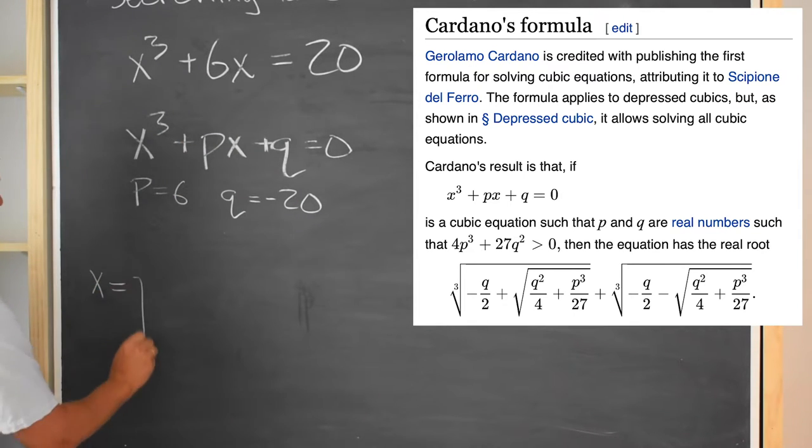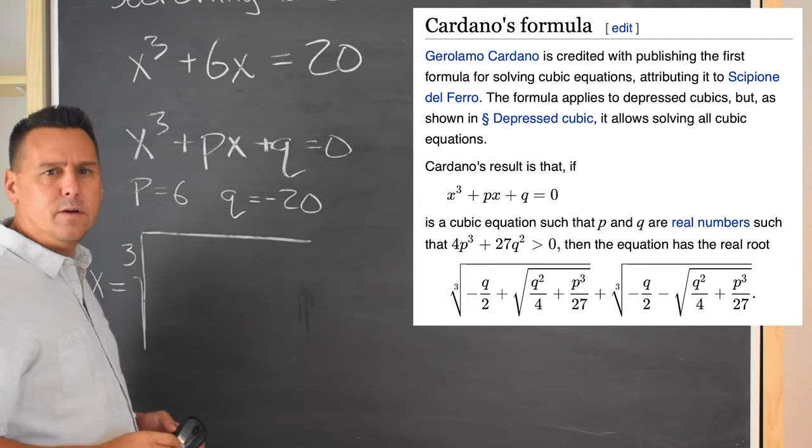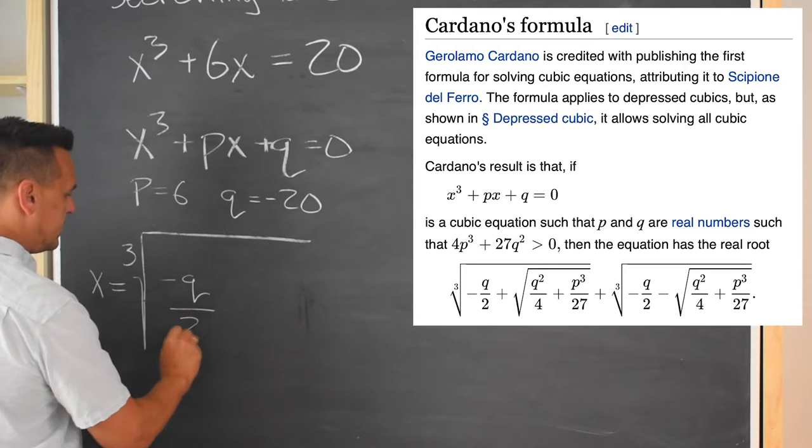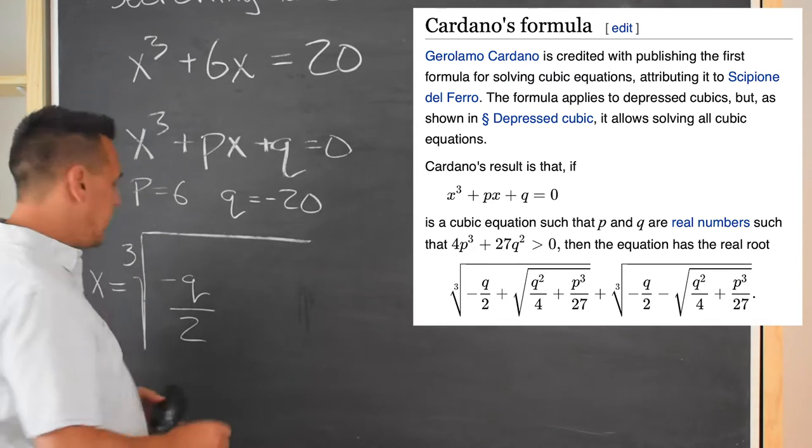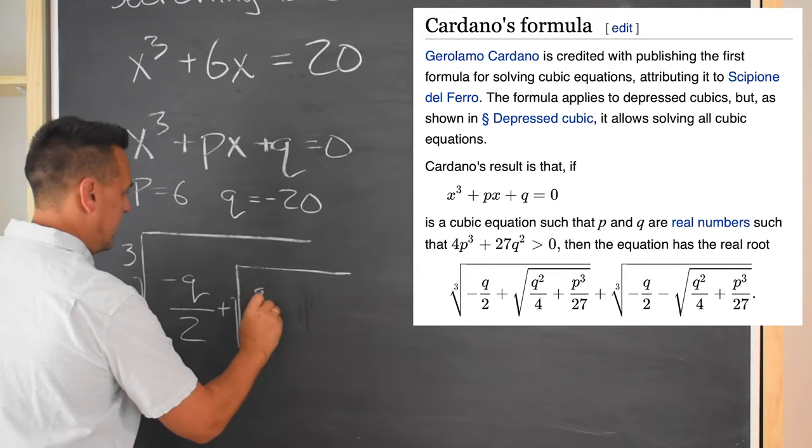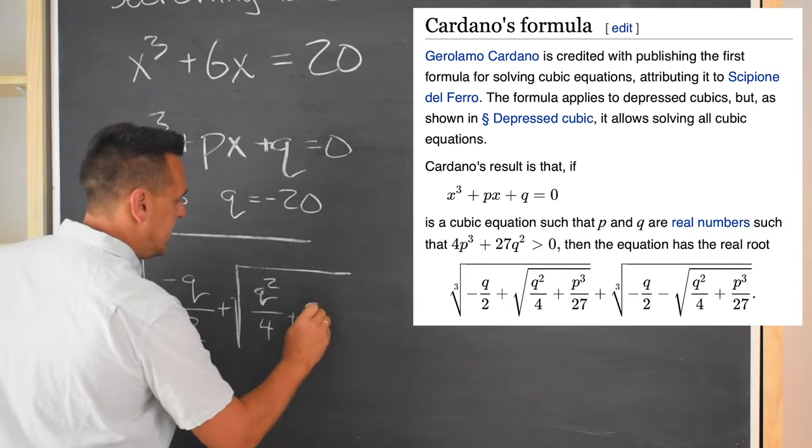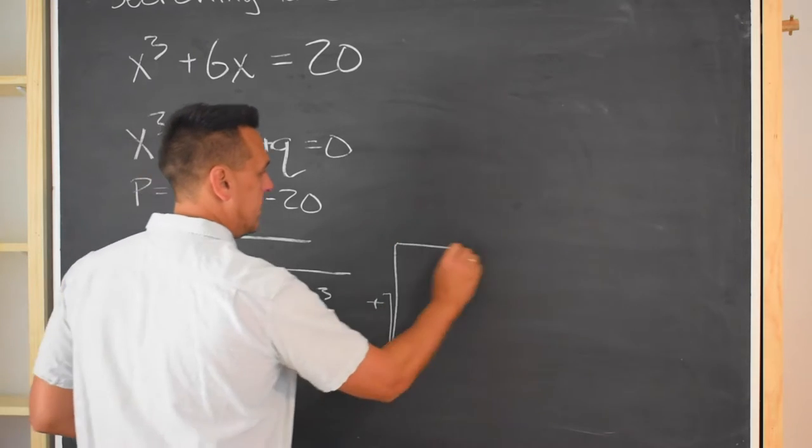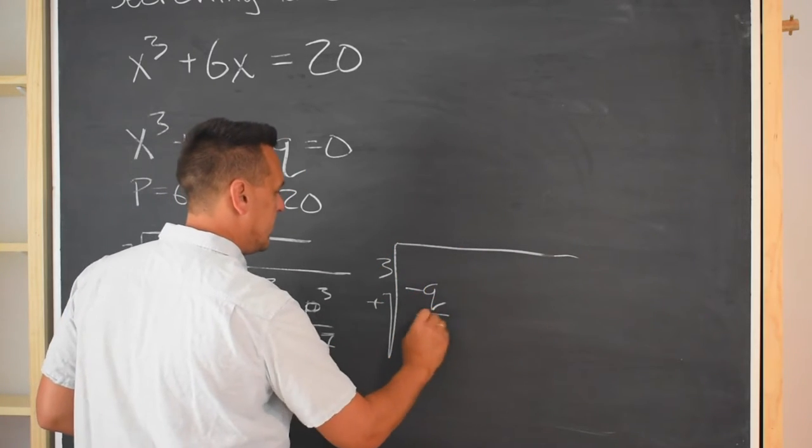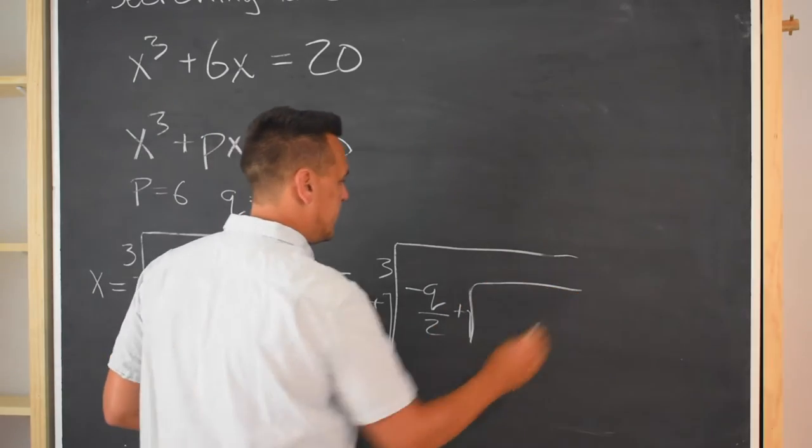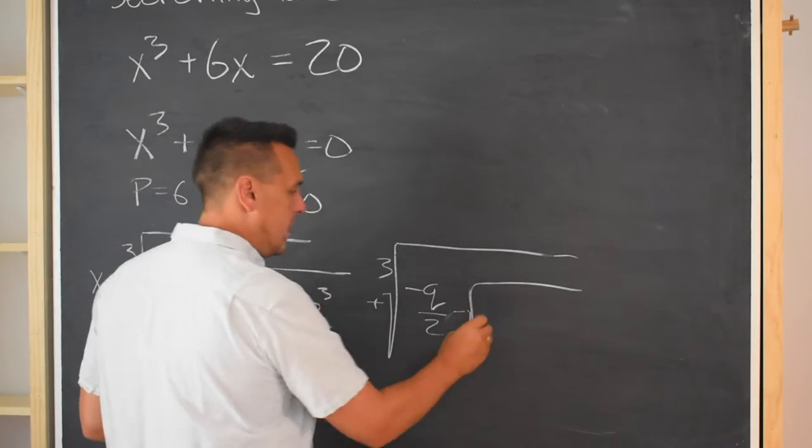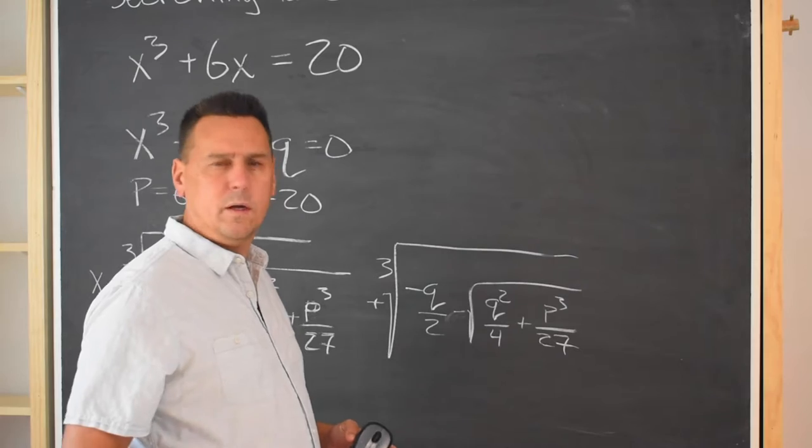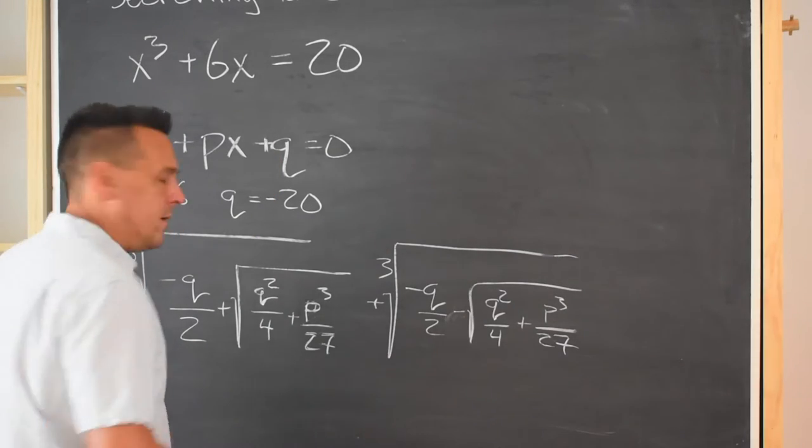If you don't remember depressing a cubic, it was a great trick. It let us just deal with cubics without an x squared term in them. It's going to make our life way easier today. On Wikipedia it says that it solves for the standard formula for x cubed plus px plus q equals 0. Alright, so I'll have to be thinking that p is 6, but then q is going to be minus 20.